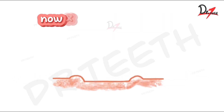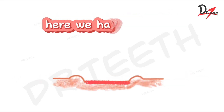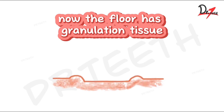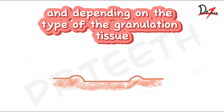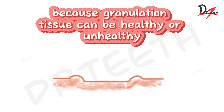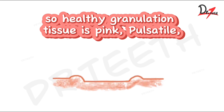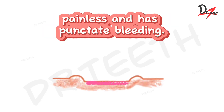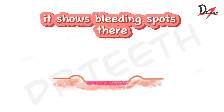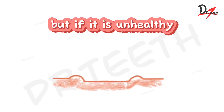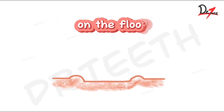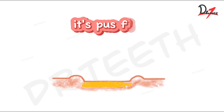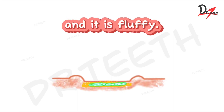Now let's talk about the floor of the ulcer. The floor has granulation tissue, and depending on the type of granulation tissue, we can classify the ulcer. Healthy granulation tissue is pink, pulsatile, painless, and shows punctate bleeding spots. Unhealthy granulation tissue on the floor is pale colored, pus-filled, and fluffy.